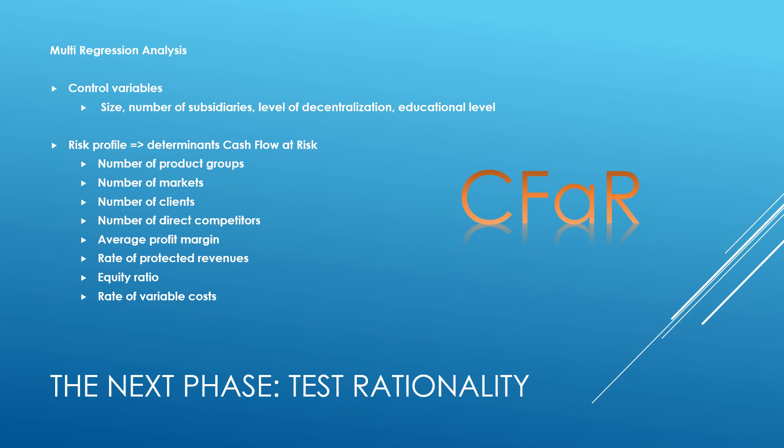Rationally speaking, as said before in this presentation, the effort a firm puts into managing its financial risk should be related to the risk profile of the firm, instead of its size or number of subsidiaries. The former tested possible determinants are not really indicators of the risk profile of a specific firm. Financial risk is dependent on other variables that directly or indirectly affect the liquidity and profit of a firm.